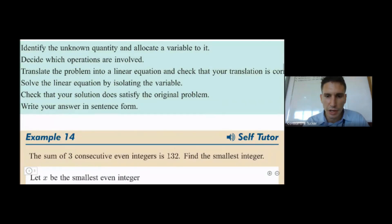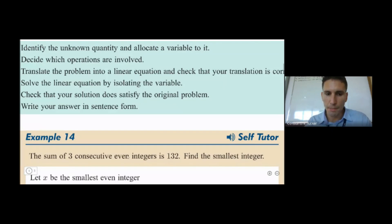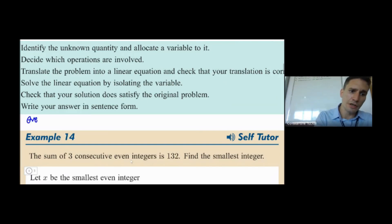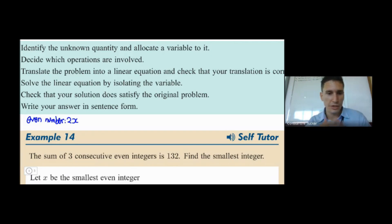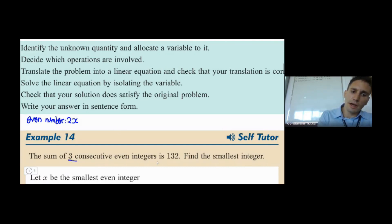So three consecutive even integers — how do we write that down? I don't like the textbook method, so I'll do it slightly differently. We saw that an even number is equal to 2x, because any even number can be written as two times something. So x could be anything: 1, 2, 3, 5, a million. Now they said three consecutive even integers, so here's the bit we need to think about.